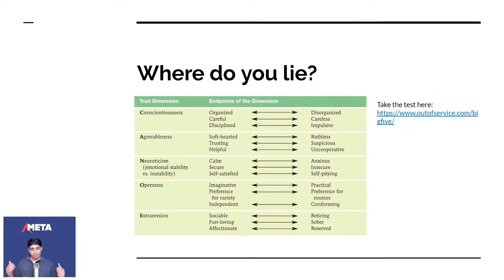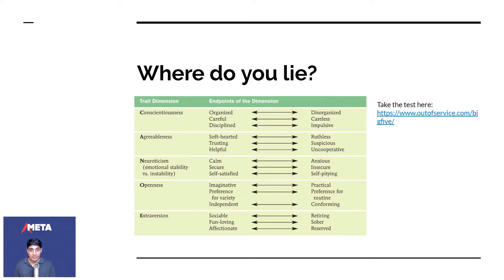The next thing is openness. You're either an imaginative person who wants variety and is independent, or you're practical — you prefer routine, you prefer to wake up at a particular time, sleep at a particular time, and you're conforming. In my own practice, I obviously scored very high on openness — I'm generally imaginative, I like variety, and I'm generally independent and non-conforming. On the other end, I know a lot of people who love a routine and want to be practical. Those people are generally a little less open and a little less imaginative.